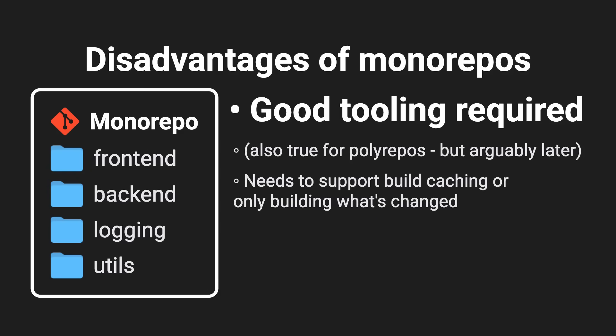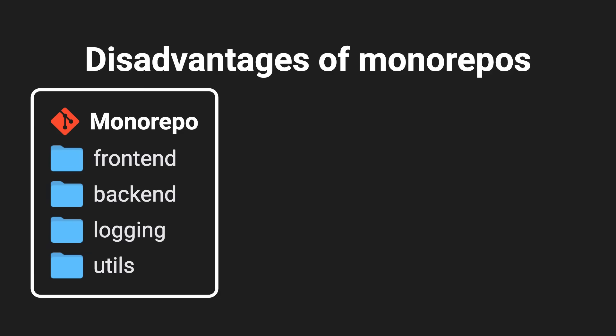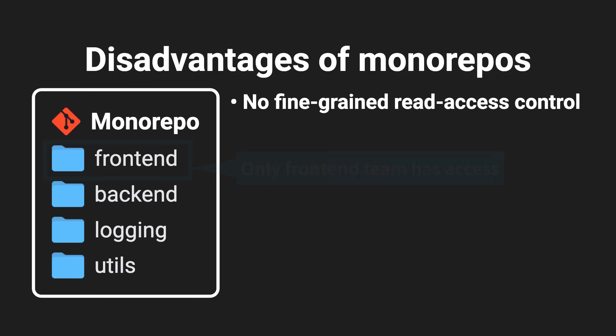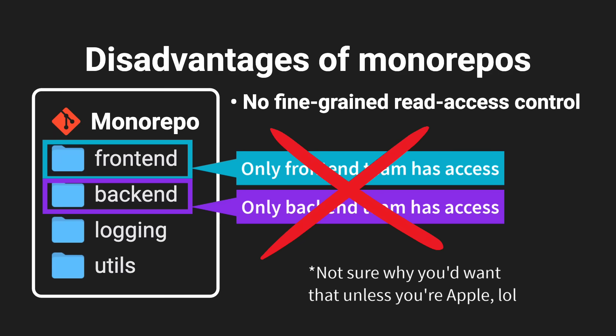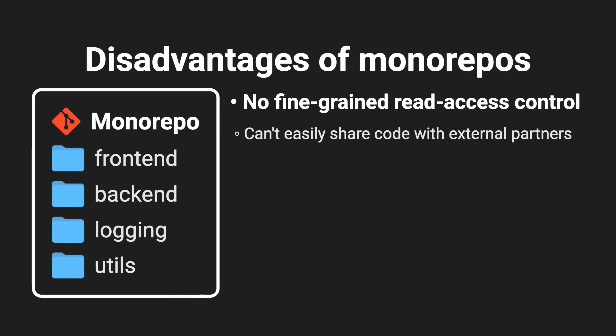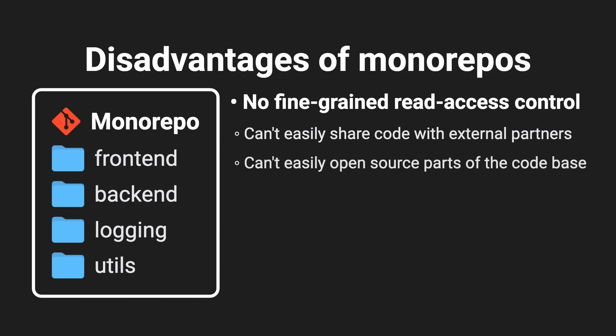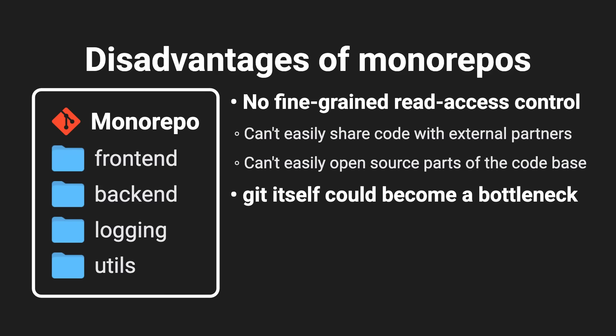You need a tool that can build only what's needed and cache built artifacts in a smart way. Even with good tooling, one big restriction is that you can't give fine-grained read access to your repo. If you want your front-end team to only see the front-end code and your back-end team to only see the back-end code, that's not really possible. This can be particularly challenging when sharing code with external partners or open-sourcing only certain parts. Another issue in really big projects is that the repo can grow to a size where common operations like cloning or switching branches get quite slow — though this really only affects huge organizations with hundreds of thousands of files and commits.